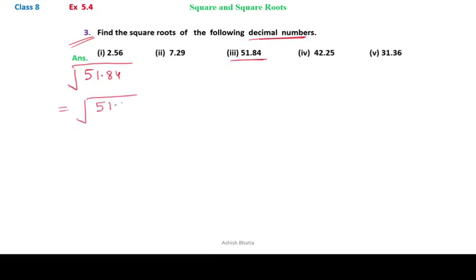When you remove the point, you get a hundred here because we have two digits from back, so two zeros. Now we have to find out the prime factors of 5184.